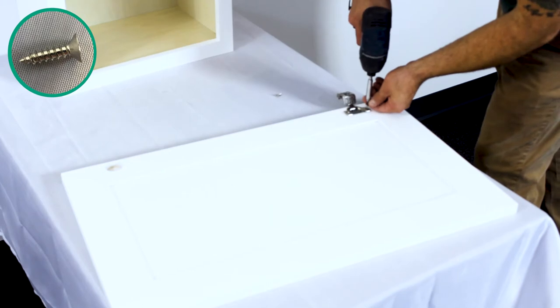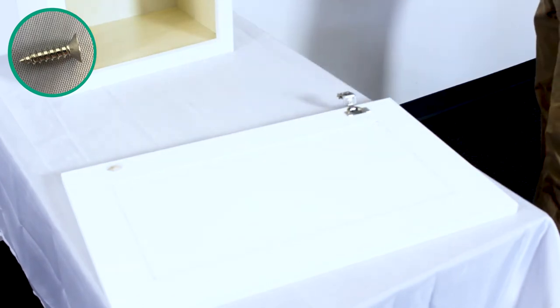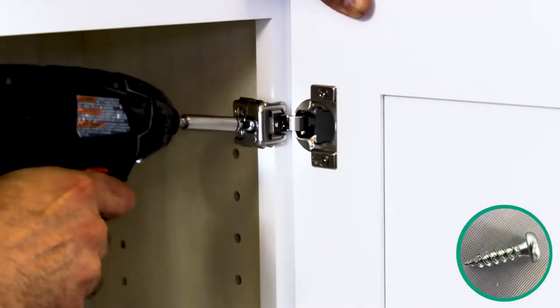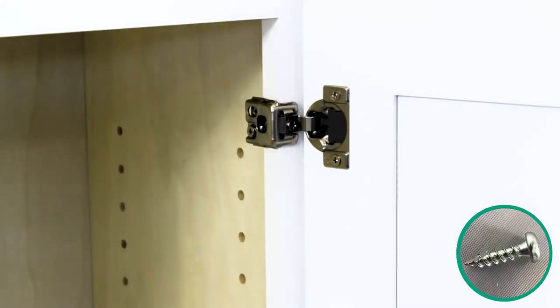Take your hinges and set them in place and fasten them down. Now place your door to the face frame and attach the hinge to the cabinet using the predetermined dimples.